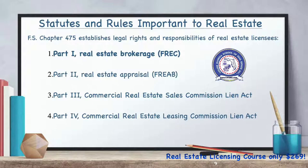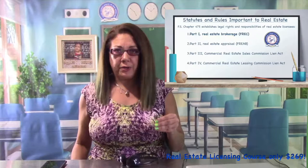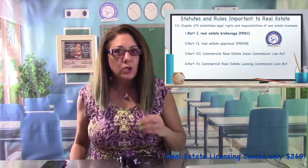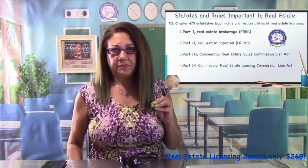Part Four gives brokers lien rights for earned commissions associated with a brokerage agreement to lease commercial real estate. Brokers have the right to place a lien in connection with commercial leasing arrangements.